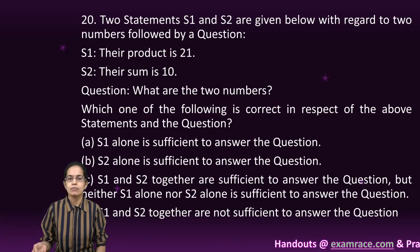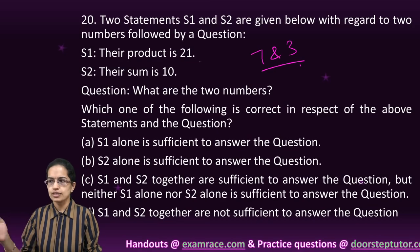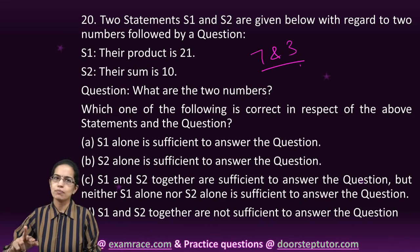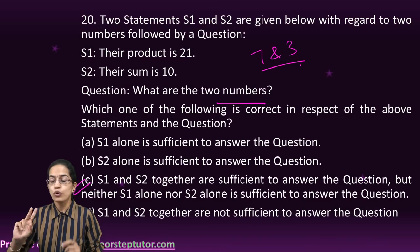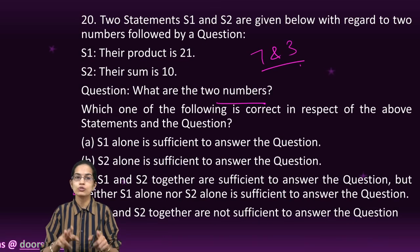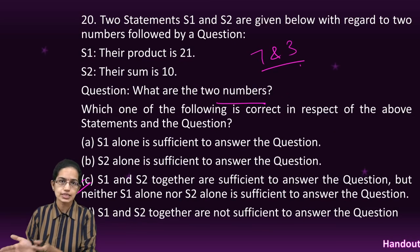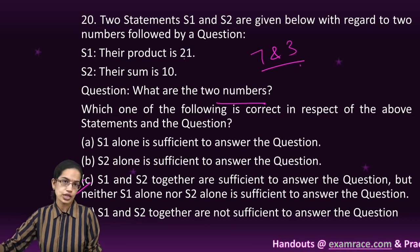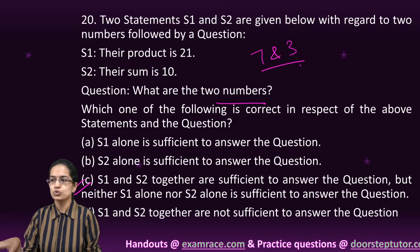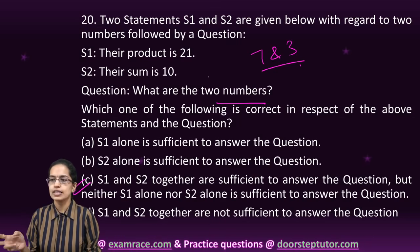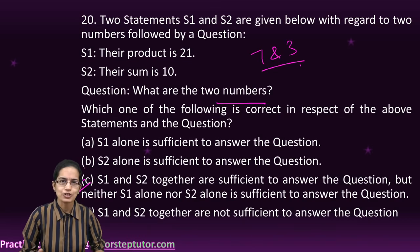There are two numbers. The sum of them is 10, the product is 21. The two numbers are 7 and 3. Both statements are required to solve this. Otherwise, I could put any combination like 6 and 4, or 5 and 5, but their products wouldn't match. To find exactly the two numbers whose sum is 10 and product is 21, I need both statements. Therefore, C is the right option.